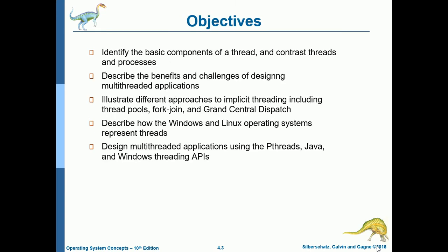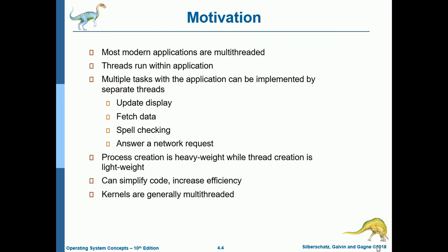The objectives for this chapter are: identify the basic concepts of a thread and contrast threads and processes; describe the benefits and challenges of designing multi-threaded applications; illustrate different approaches to implicit threading including thread pools, fork-join, and Grand Central Dispatch; describe how Windows and Linux operating systems represent threads; and design multi-threaded applications using the pthreads, Java, and Windows threading APIs.